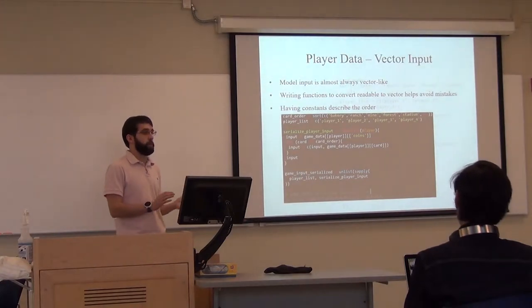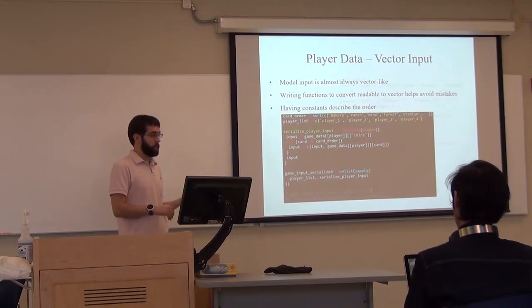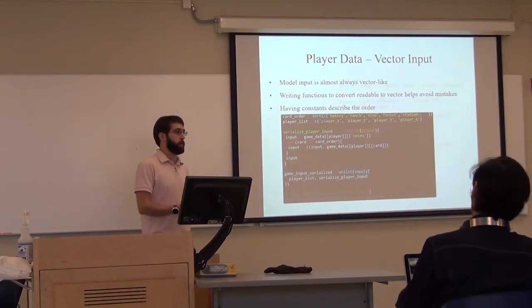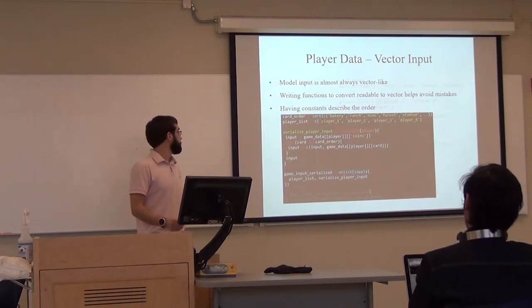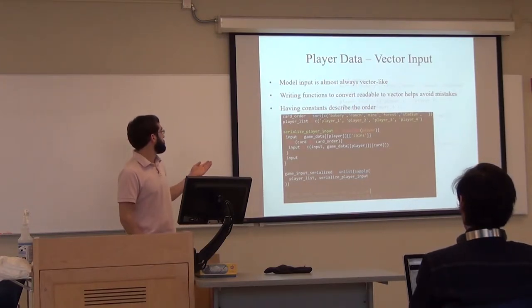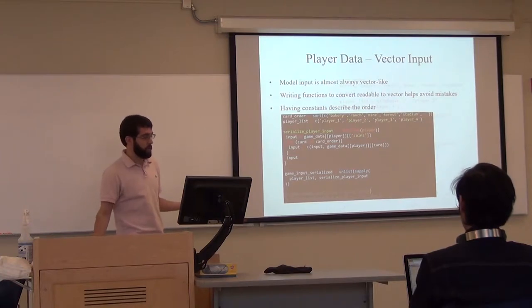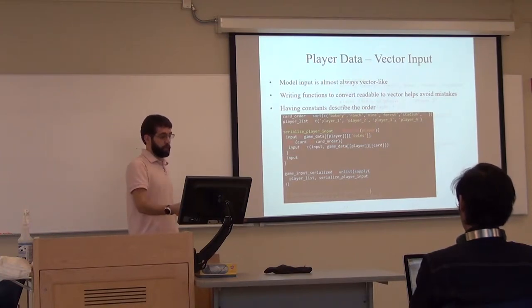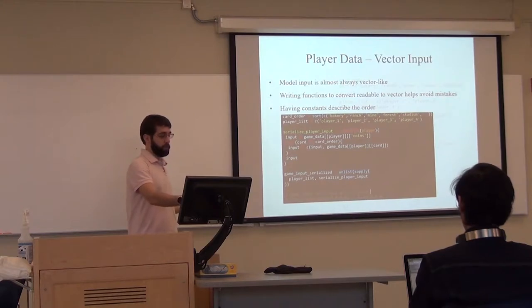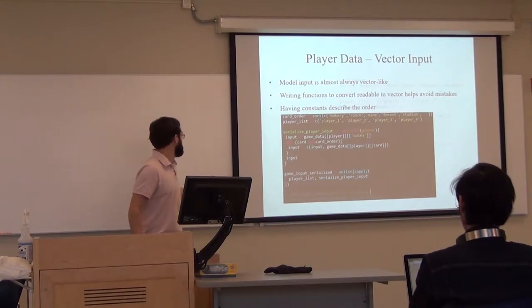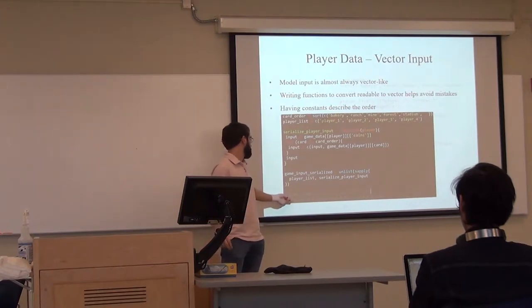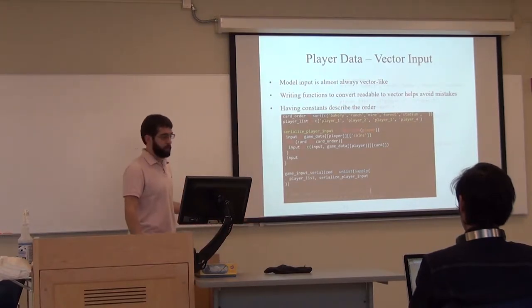But most of the time, your computer is not going to like to read that. When it's constructing a model, you need to be able to represent it as a numeric vector. I like having some constants here. In this case, just a short example of a card order that's consistent and a way to serialize that data from a nested list to a vector. The output vector is just a bunch of numbers there, which represents the coins they have and then the presence of each card.